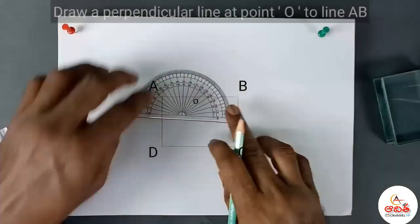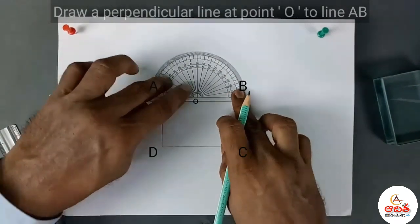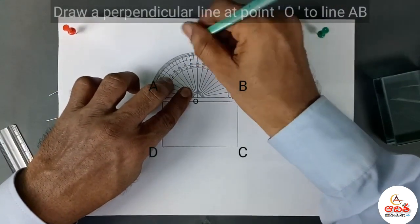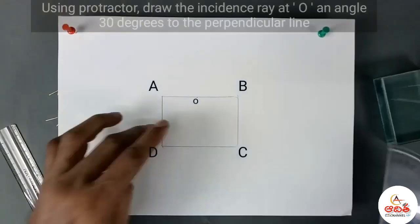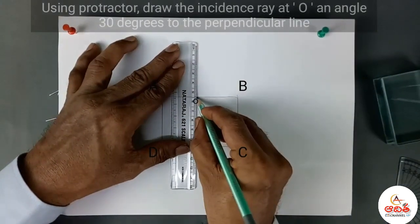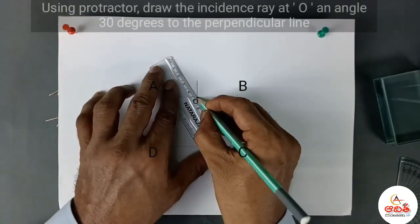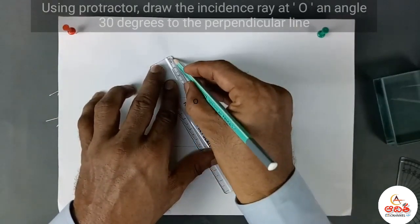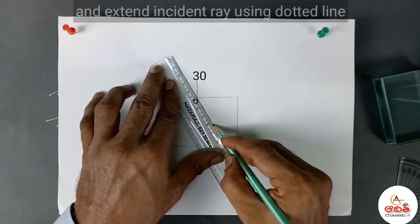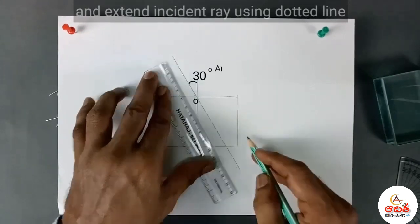Draw a perpendicular line at point O to line AB. Using a protractor, draw the incident ray at O at an angle of 30 degrees to the perpendicular line, and extend the incident ray using a dotted line.